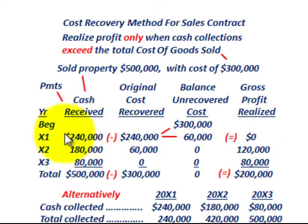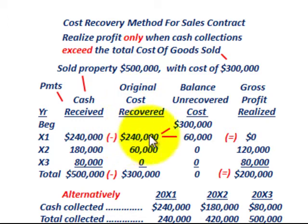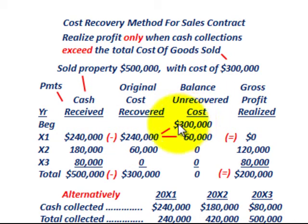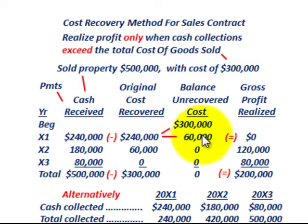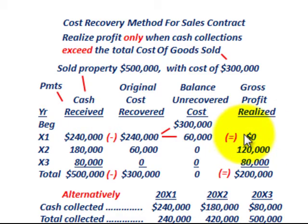Let's look at year 20x1. We've received a cash payment of $240,000. We have an unrecovered cost balance of $300,000, so in year one we've recovered $240,000 of the cost. What's remaining is the difference between $300,000 and $240,000, so we still have $60,000 of unrecovered cost. We have to receive cash payments covering that before we can realize any gross profit. So for the first year, zero gross profit.